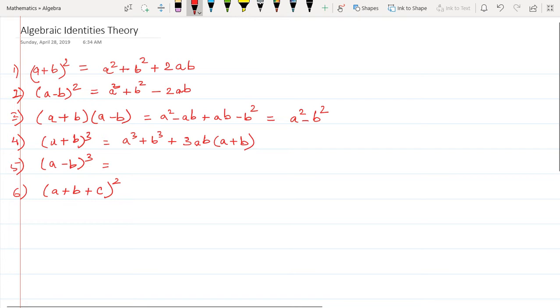But now as mentioned before, all odd powers of b will now have a negative sign. So this will be a³ - b³ - 3ab into (a-b).